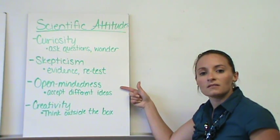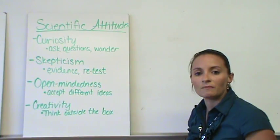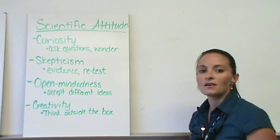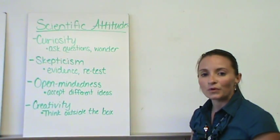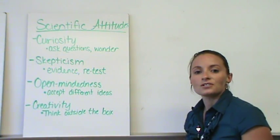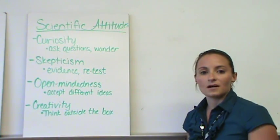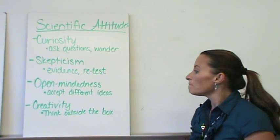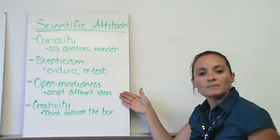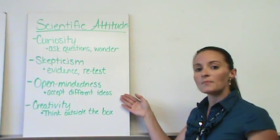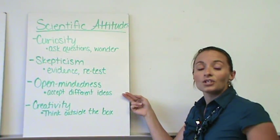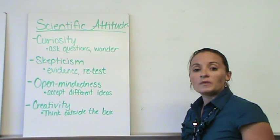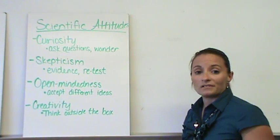The third piece of a scientific attitude is open-mindedness. You need to be open-minded. Otherwise, we're going to have a lot of scientists running tests that they think they know the answer to. You need to be able to accept different ideas. If your hypothesis is not accepted, you need to accept that piece of evidence. Open-mindedness is important in science.